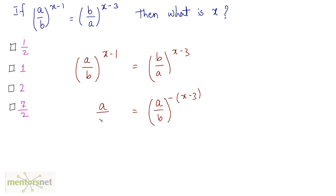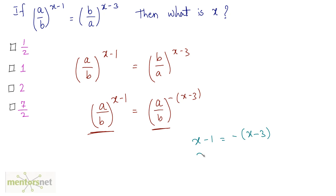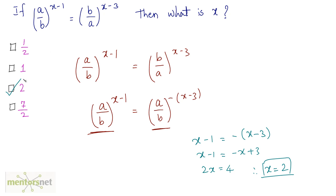On the left hand side I have (a/b) raised to x minus 1. Since these numbers are the same, I can directly write x minus 1 is equal to minus of x minus 3. Therefore x minus 1 equals minus x plus 3, so 2x equals 4, therefore x is equal to 2. The answer is option C.